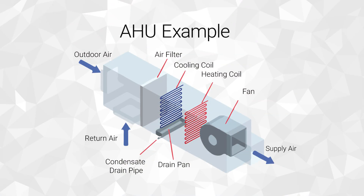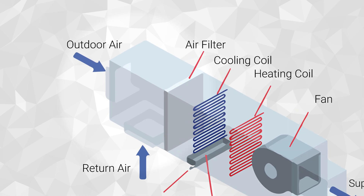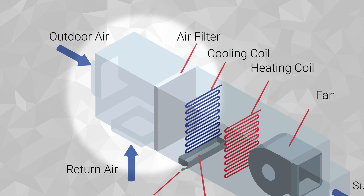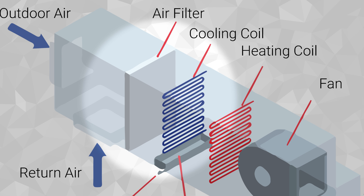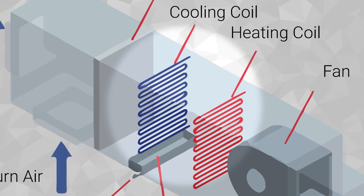Here's how it works. Air enters the AHU and is first filtered to remove contaminants. The incoming air is often a mix of outside air and return air, which has already moved through the space. This mix ensures fresh air and helps to maintain indoor air quality. The air then passes through cooling or heating coils, depending on the stage being run on the unit.